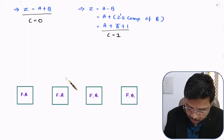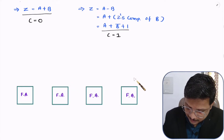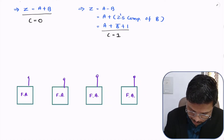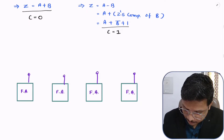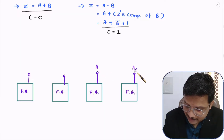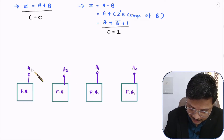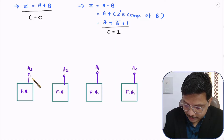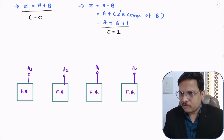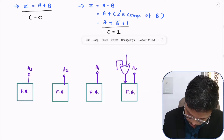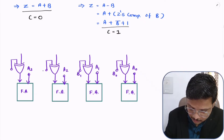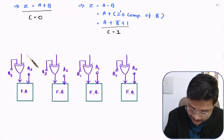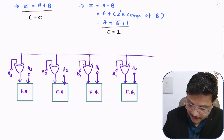With these four full adders, one input will be A. The data A is 4 bits, so inputs are A0 (LSB), A1, A2, and A3 (MSB). The second input to each full adder will be given through an XOR gate. One input to this XOR gate will be data B — that is B0, B1, B2, and B3. The second input to this XOR gate will be the selection bit C.